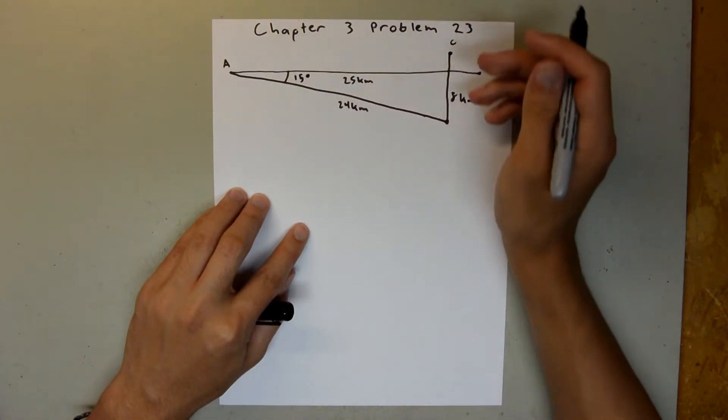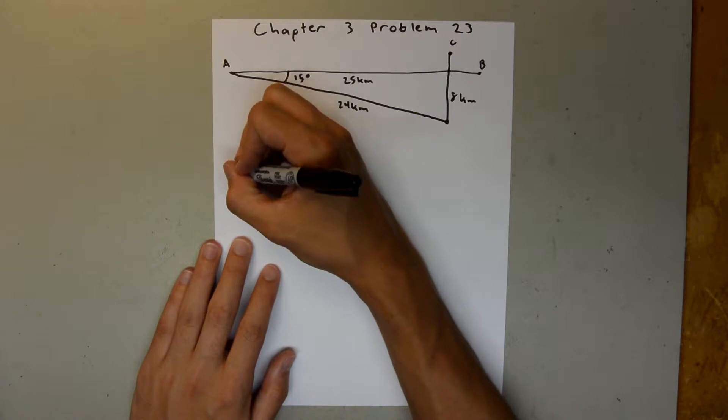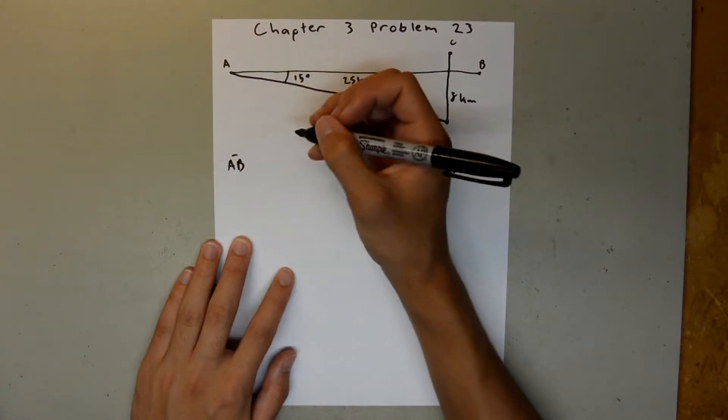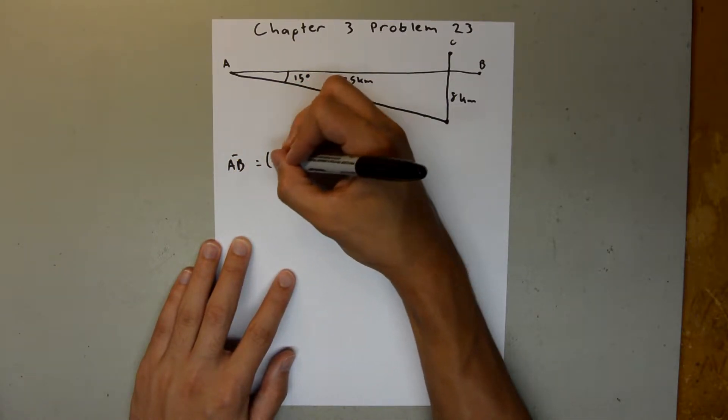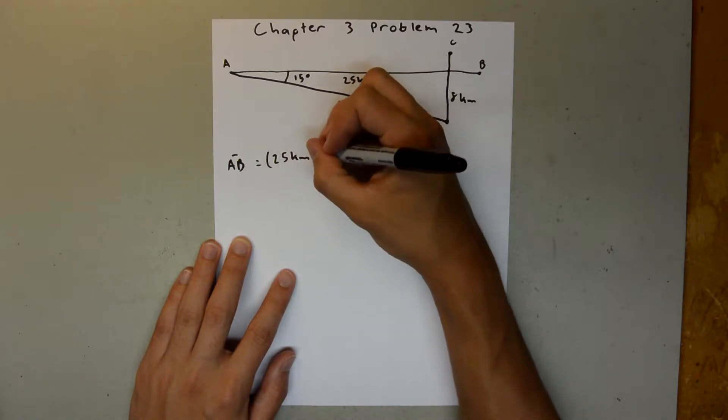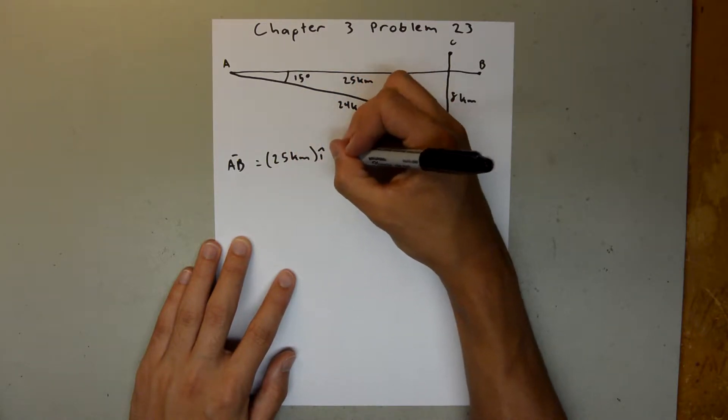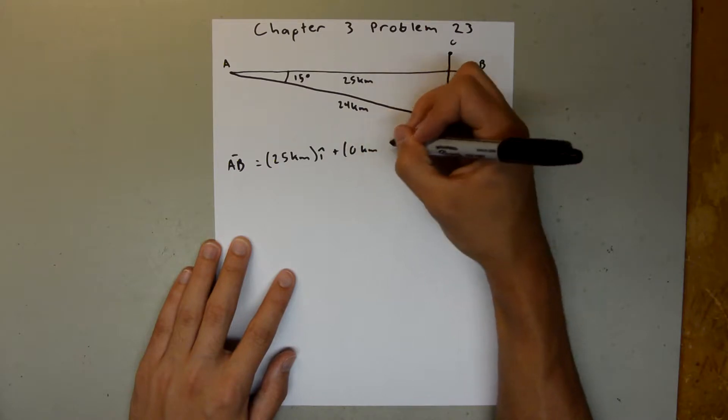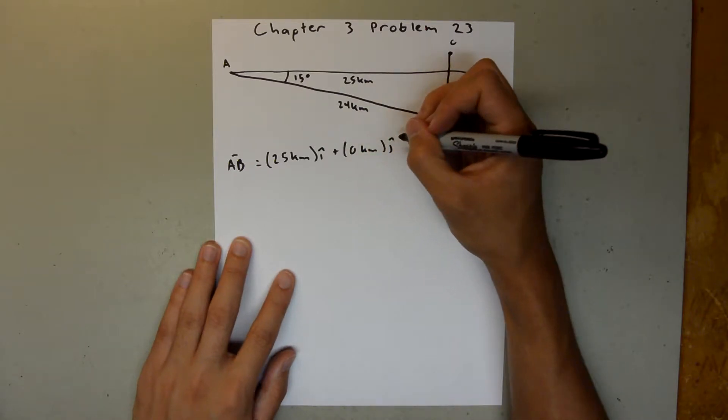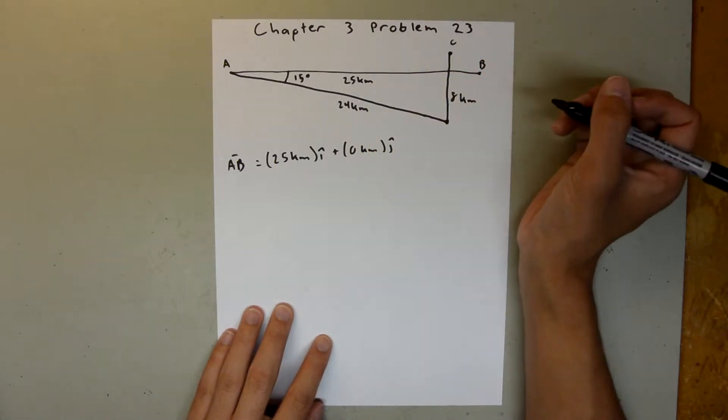So, from this, we know that vector AB is equal to 25 kilometers I hat, plus 0 kilometers J hat.